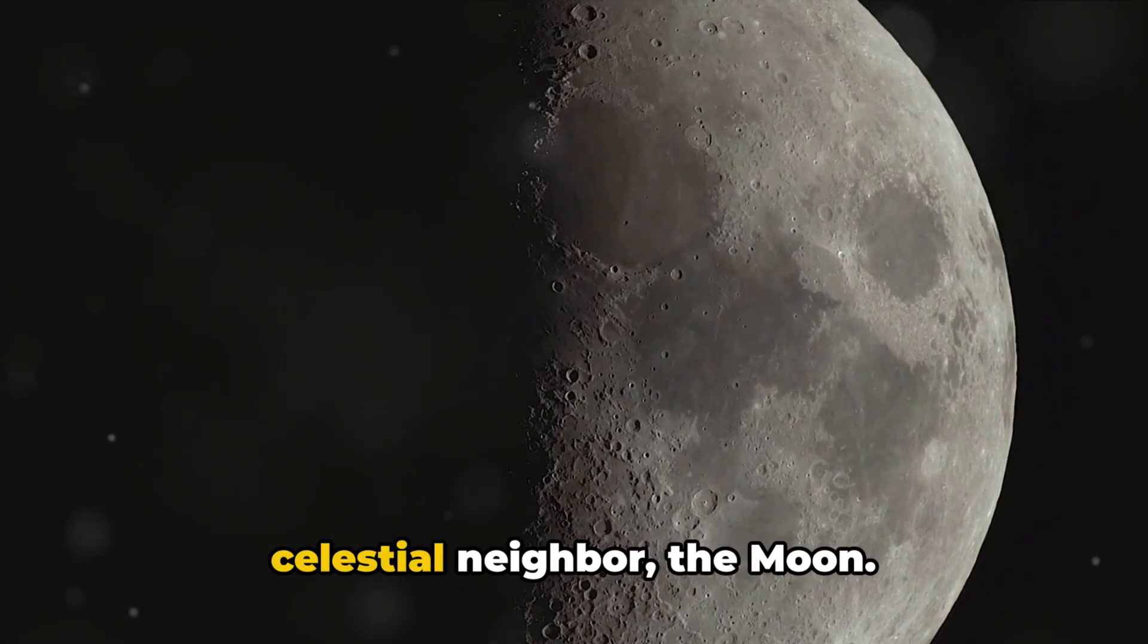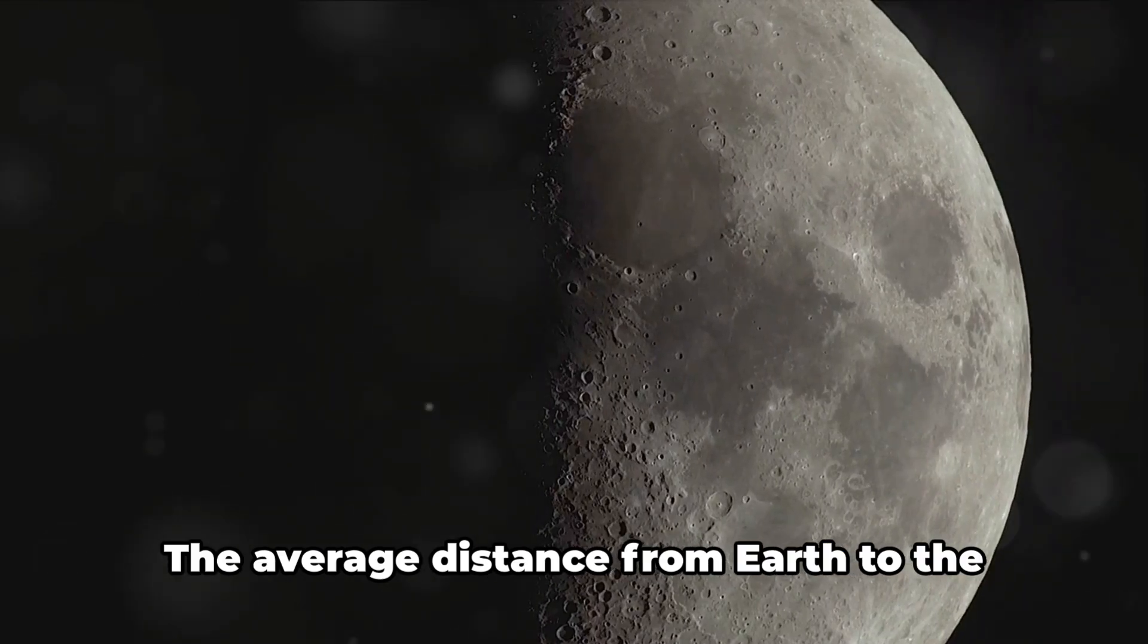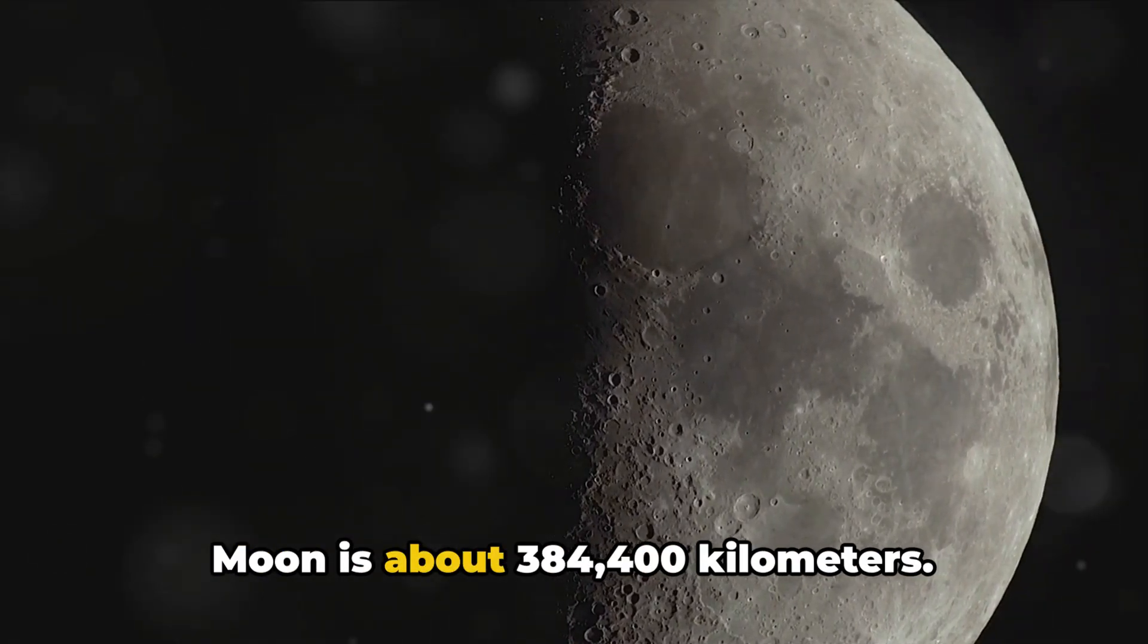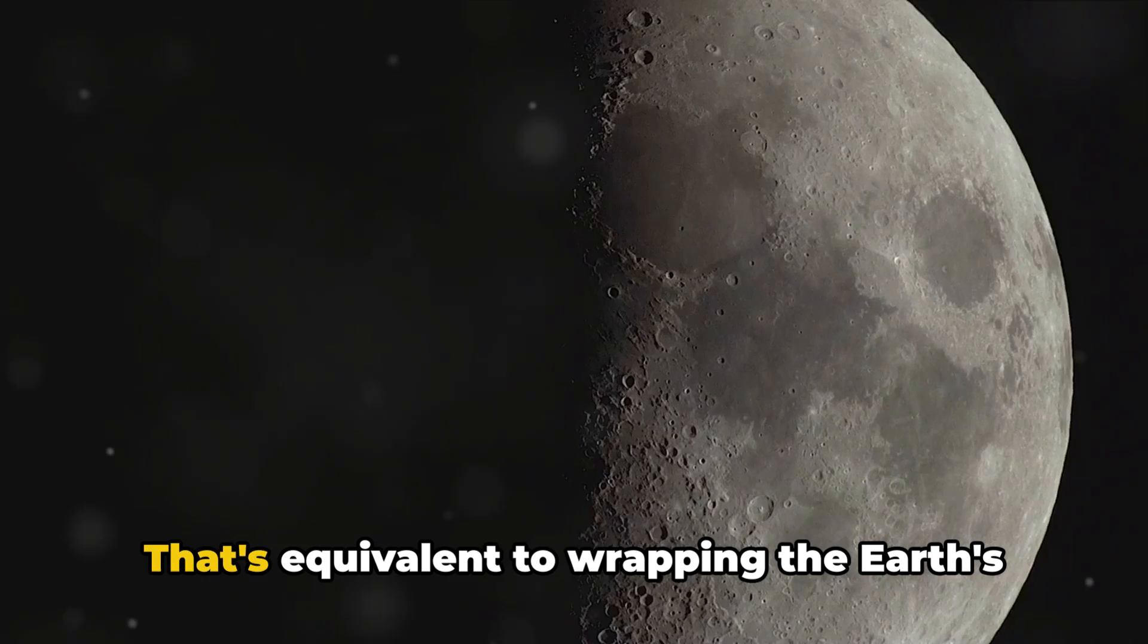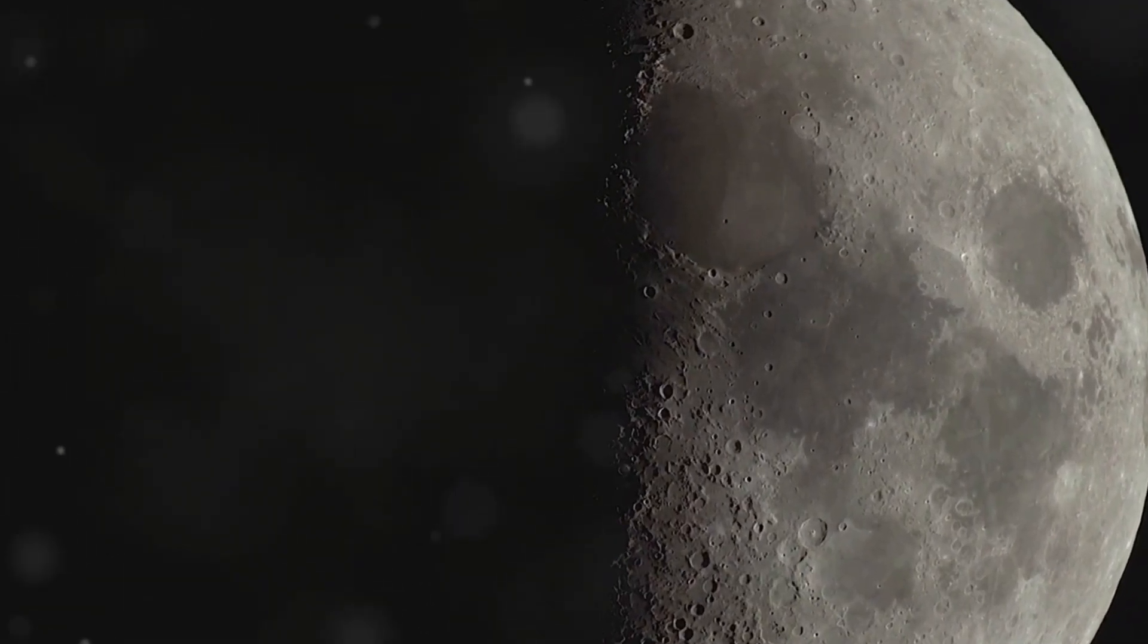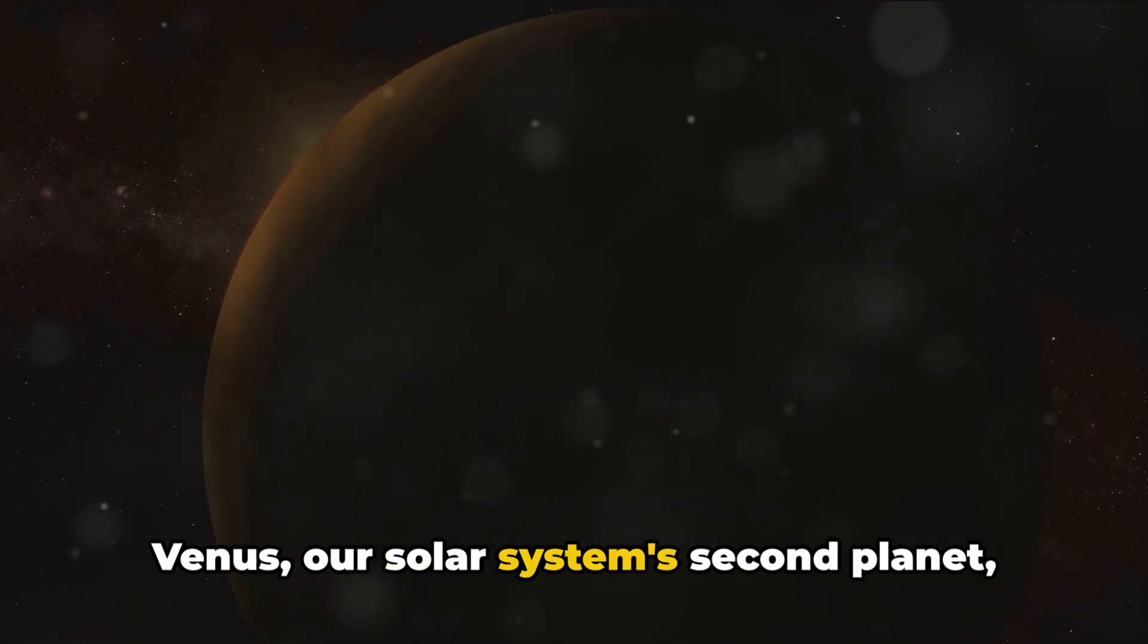Now let's turn our gaze to our closest celestial neighbor, the moon. The average distance from Earth to the moon is about 384,400 kilometers. That's equivalent to wrapping the Earth's equator nearly 10 times.